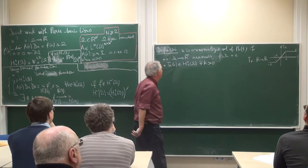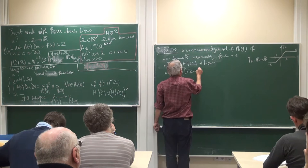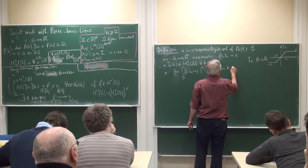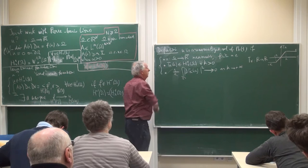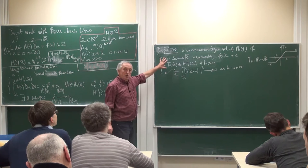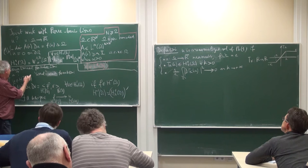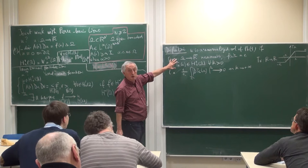Then I will assume that (1/k) times the integral over Ω of |∇Tₖ(u)|² tends to zero as k tends to +∞. I will explain why — this is essential. This is the space where the function is living; in the weak formulation the function was living in H¹₀, this is now the space where the function will live.